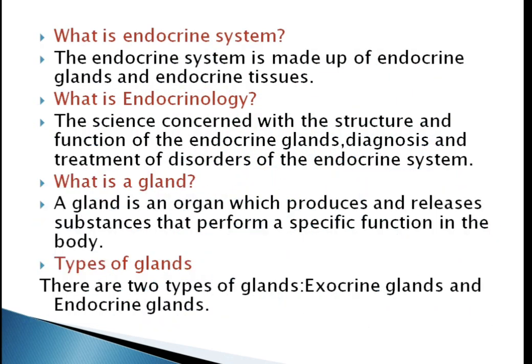What is the endocrine system? The endocrine system is made up of endocrine glands and endocrine tissues. The science concerned with the structure and function of the endocrine glands, diagnosis and treatment of disorders of the endocrine system is known as endocrinology.